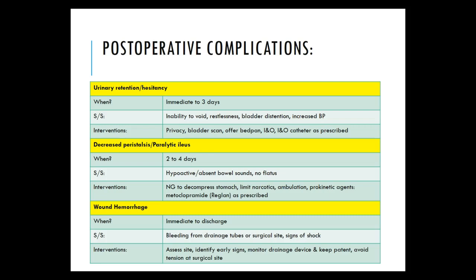Decreased peristalsis or paralytic ileus: signs and symptoms include hypoactive or absent bowel sounds and no flatus. Ask patients if they are passing gas, as this is usually the first thing they will experience before bowel movements return. If suspected, an NG tube may be used to decompress the stomach, limit narcotics (which increase constipation), encourage early ambulation, or a prokinetic agent like metoclopramide (Reglan) may be prescribed.